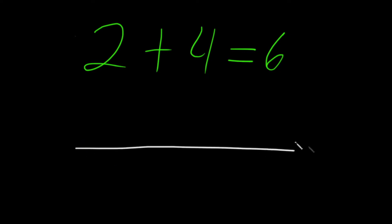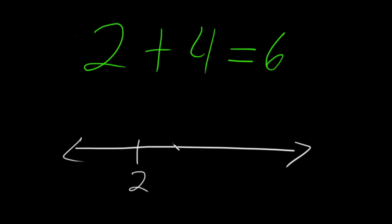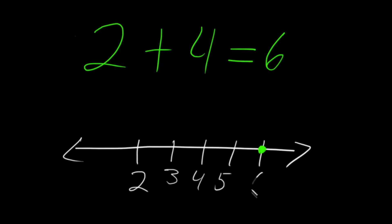So let's say we have a number line. Over here we have 2. On a number line, the numbers get larger to the right and smaller to the left. So anytime we're adding a positive number, like this 4, we're going to move that many steps over to the right. So if we count 1, 2, 3, 4, we're going to end up here — and that value is 6.